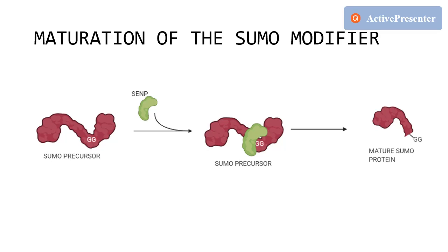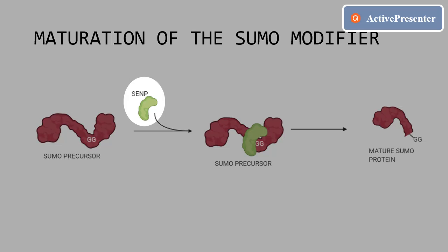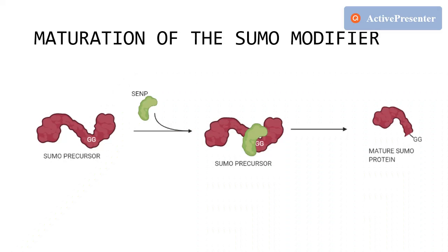SUMO protein maturation occurs when specific isopeptidases, such as ubiquitin-like proteases, hydrolyze the alpha-linked amino acid peptide bond at the C-terminal end, revealing the double glycine motif.